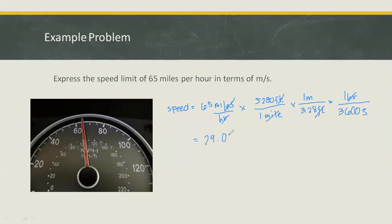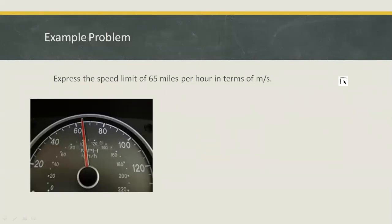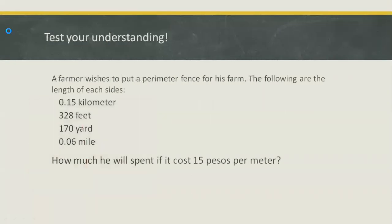Calculating this, we have 29.06 meters per second. Now test your understanding: a farmer wishes to put a perimeter fence for his farm. The following are the lengths of four sides: 0.15 kilometers, 328 feet, 170 yards, and 0.06 miles. The question is how much will he spend if it costs 15 pesos per meter. Type your answer in the comment section.